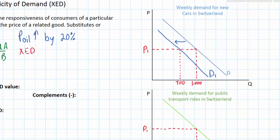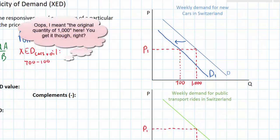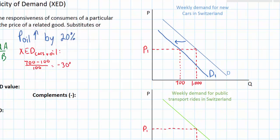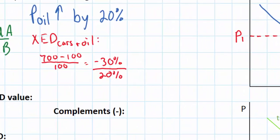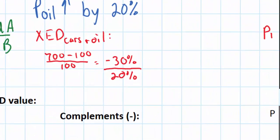So we'll look at the XED for cars and oil. First we calculate the percentage change in the quantity of cars: we take the new quantity of 700, subtract the original quantity of 1,000, and divide the difference by the original quantity of 1,000. This gives us a negative 30% change in the quantity of new cars. Now we divide this by the percent change in price, which was a 20% increase in the price of oil. So we have the percent change in the quantity of good A (cars) on top, and the percent change in the price of good B (oil) on the bottom, giving us an XED coefficient of negative 1.5.